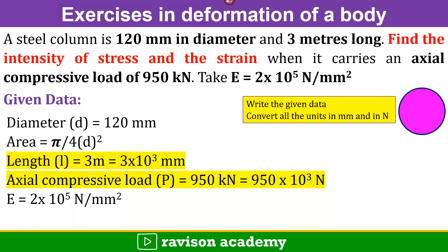Diameter is given 120 mm. Convert to area. Find out the area since it is a circular section, pi by 4 d square. The length is given as 3 meters.